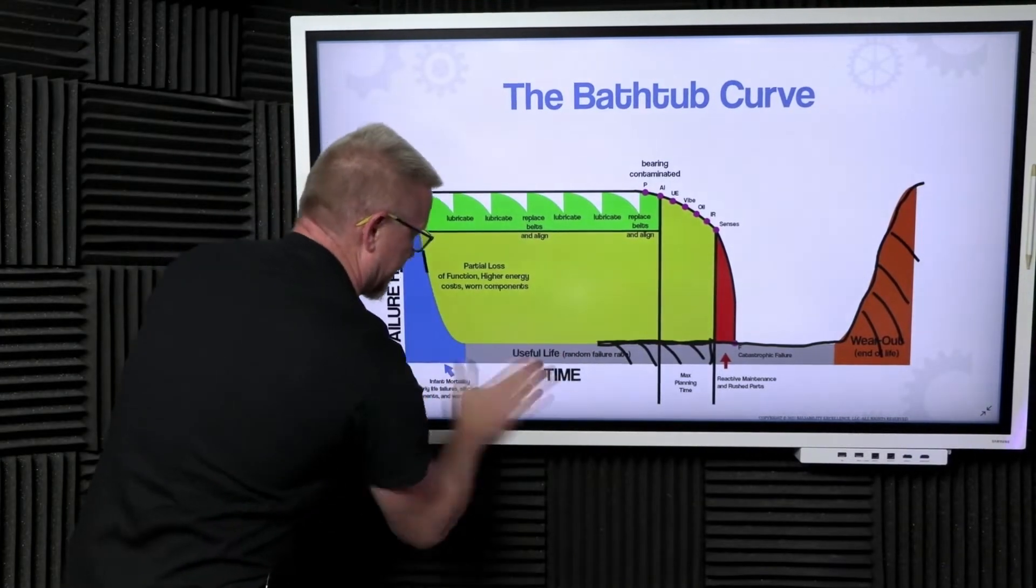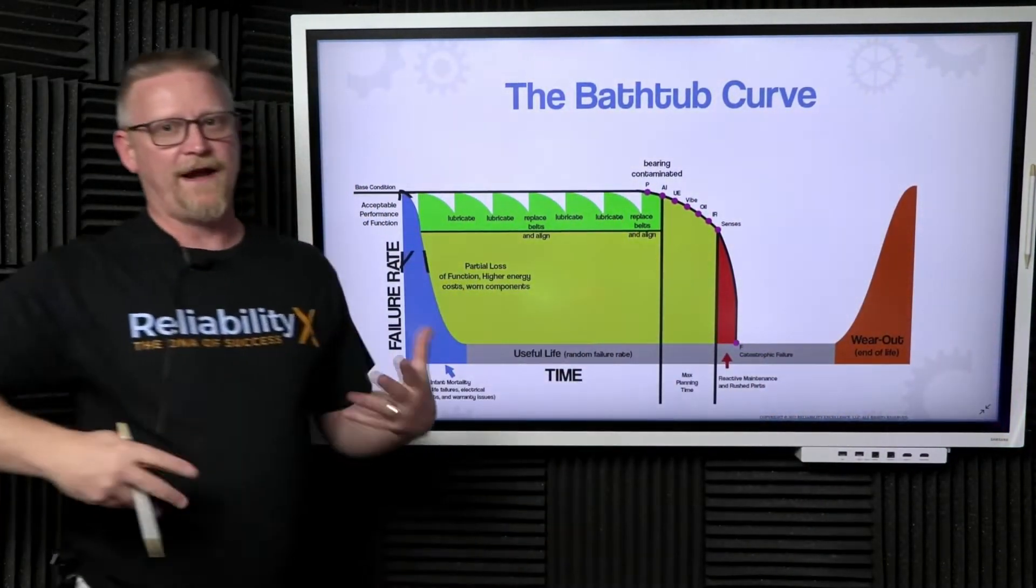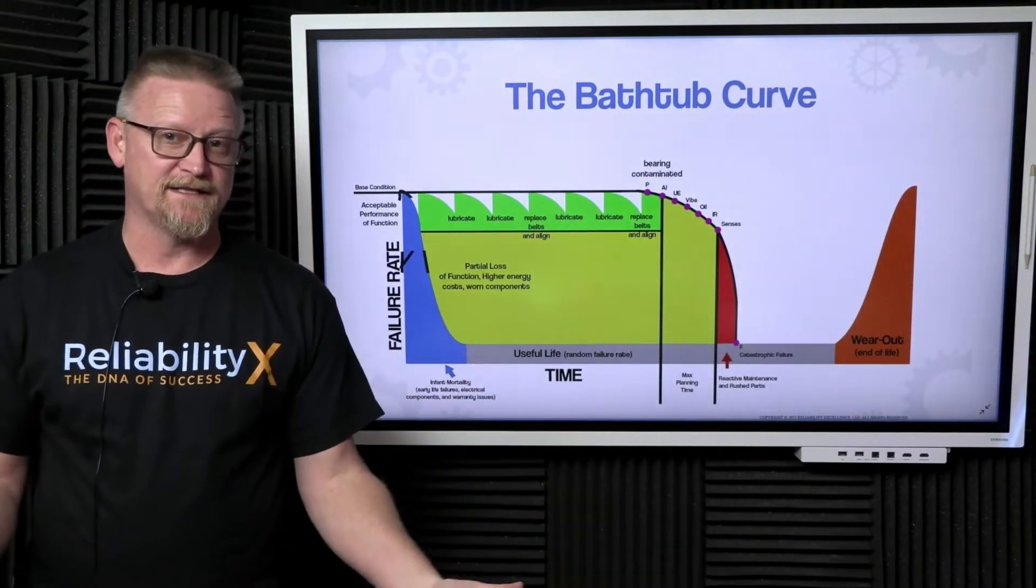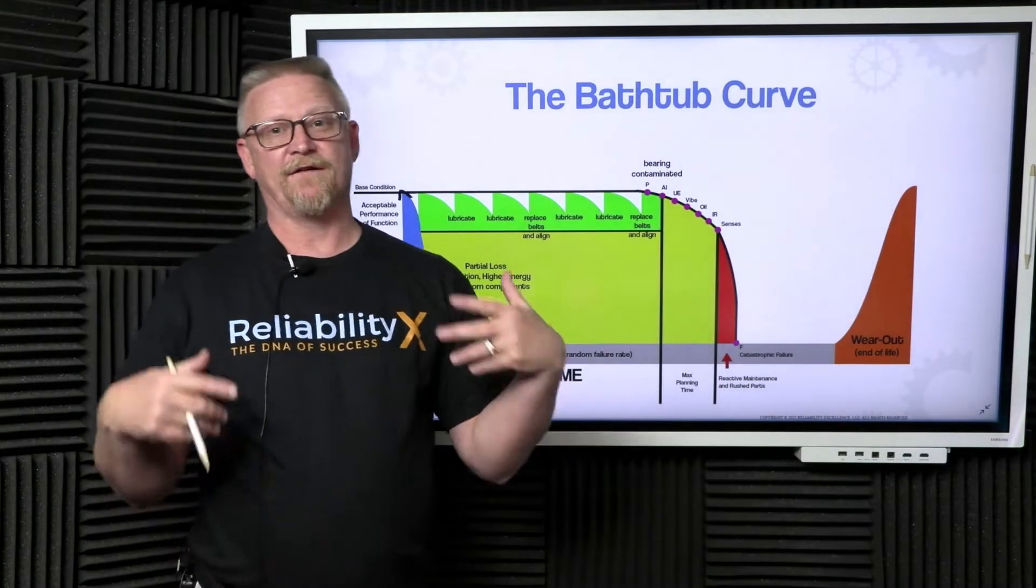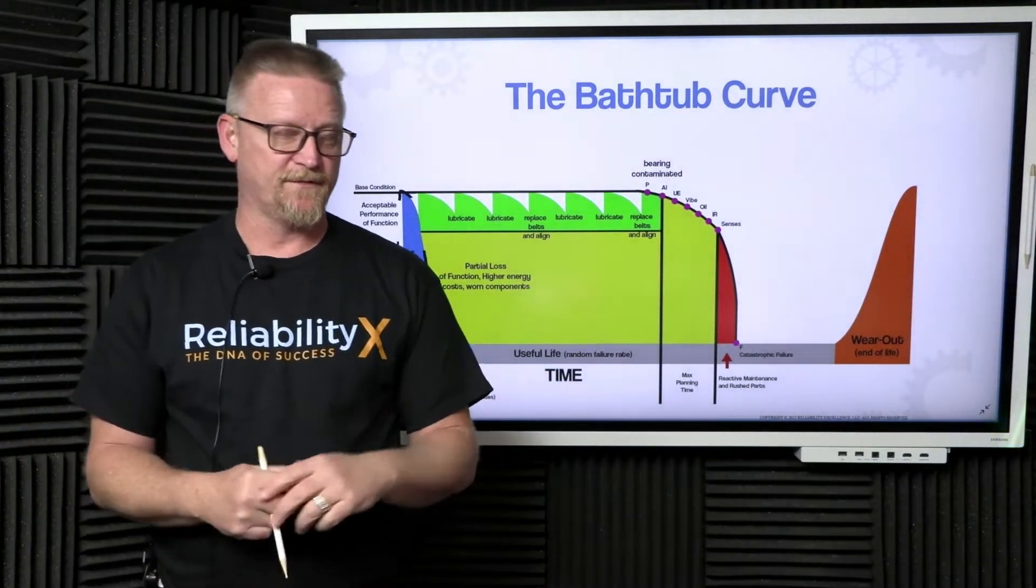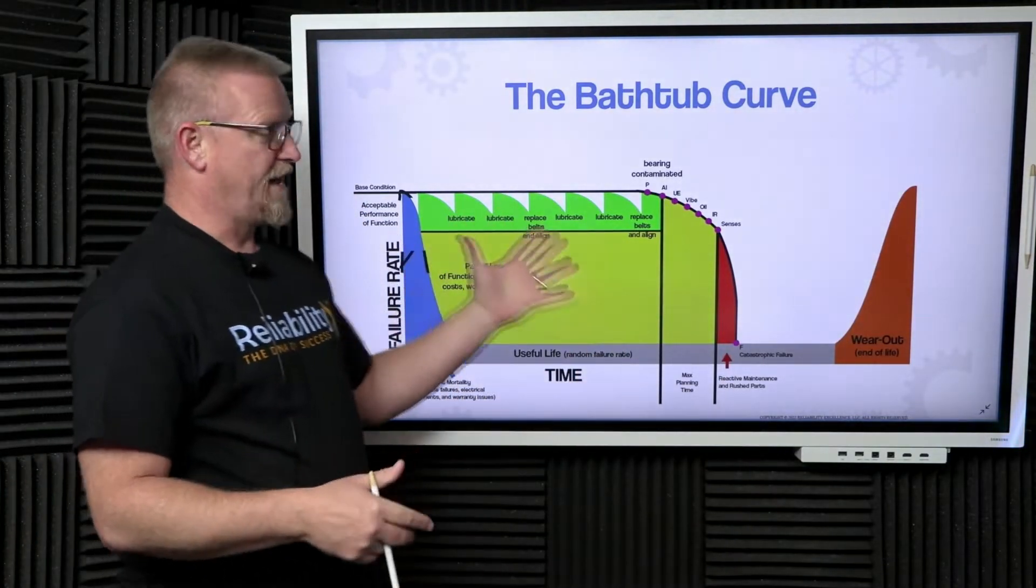That brings us back to the random event section. In our random event section, this is where a speck of dust gets in our bearing and eventually takes the bearing out. This is where misalignment begins to create issues on equipment and ultimately leads to a seal failure.